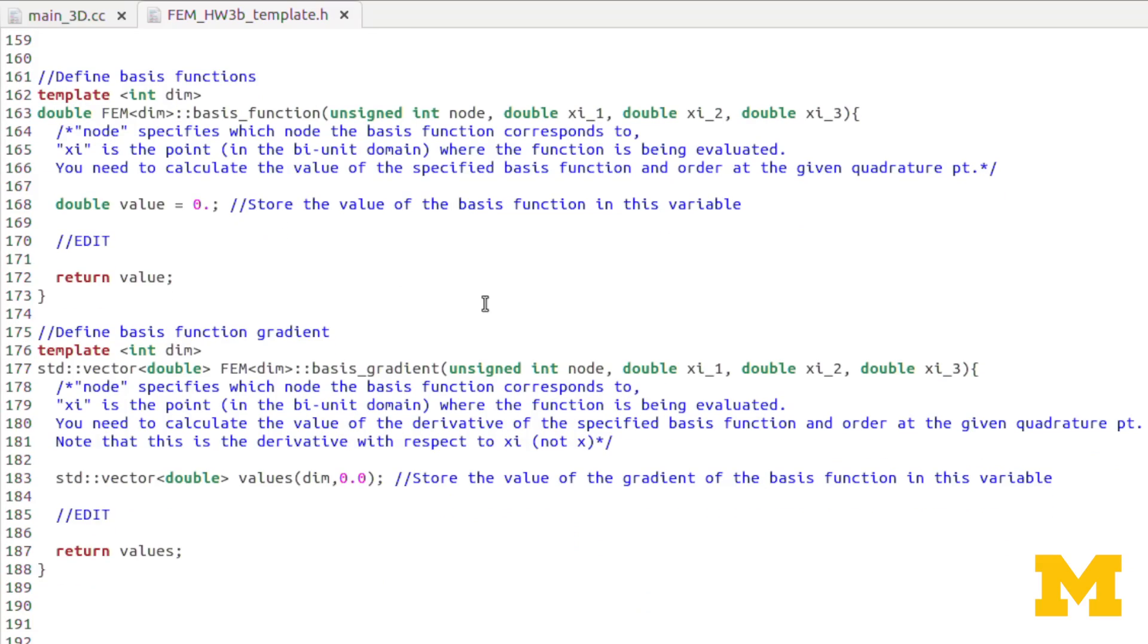Moving back down to the basis functions and basis gradient. We've already covered the difference here. It's just that you have a third input. However, again, we have to watch out for the DL2 node numbering. Let's go to the board, quickly.